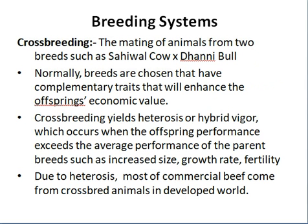The second breeding system is crossbreeding — the mating of animals from two different breeds. For example, a Sahiwal cow with a Dhani bull or a Holstein bull. Normally, breeds are chosen that have complementary traits. The male breed should have certain features and the female breed should have specific characters, which we try to unite in their offspring.